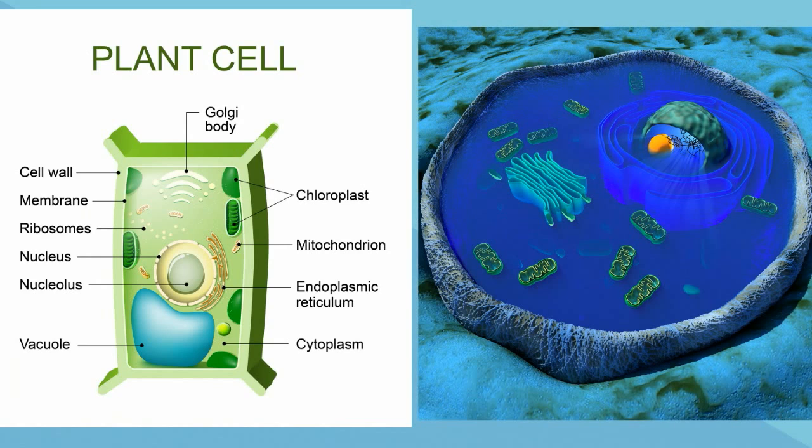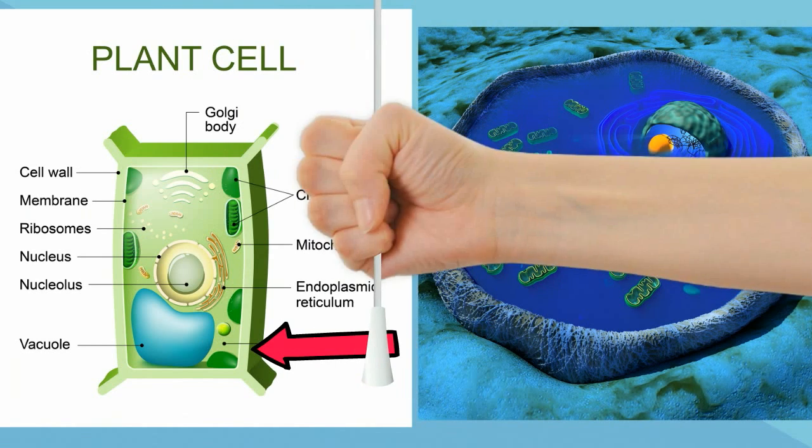Let's take a look at the difference between the vacuole in a plant and animal cell. On the left, you'll notice that the vacuole for the plant cell is very large and there is one central vacuole. The vacuoles in animals are much smaller.